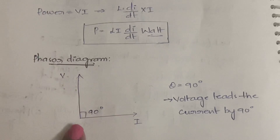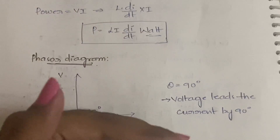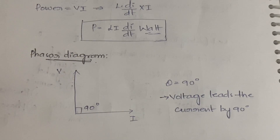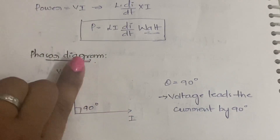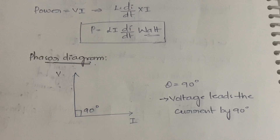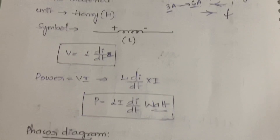In the phasor diagram for inductance, the angle between voltage and current is 90 degrees. Voltage is on top, so voltage is leading the current by 90 degrees. To summarize: inductance opposes changes in magnitude or direction of current, the unit is henry, and in the phasor diagram voltage leads current by 90 degrees.